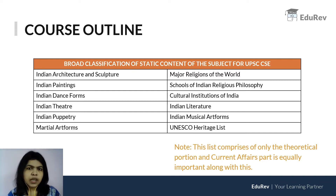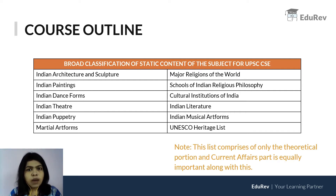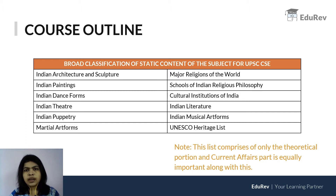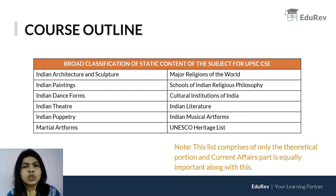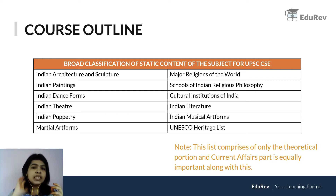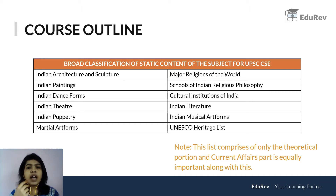Starting from architecture — we will be dealing with the IVC which is the Indus Valley Civilization, Maurya culture, Gupta architecture, moving down south to Pandya-Chola architecture, and very importantly, Mughal architecture. After that, something very important is religions of the world and the schools of Indian religious philosophy, because Buddhism and Jainism are said to be some of the very important subjects. UPSC just loves those subjects. That is again very important. Then we have dance forms, theatre, puppetry and martial art forms.